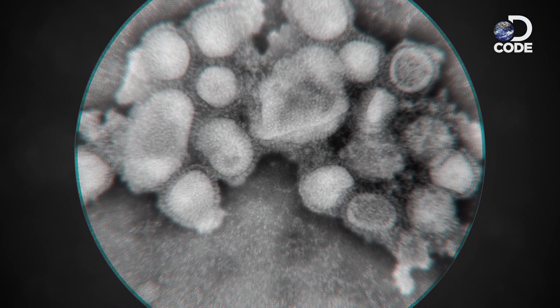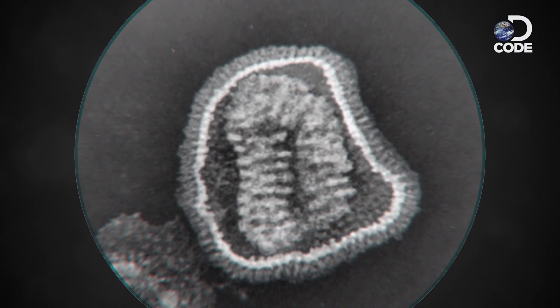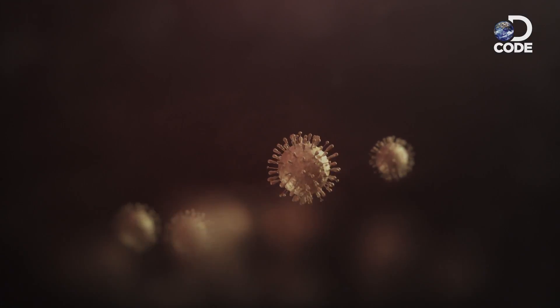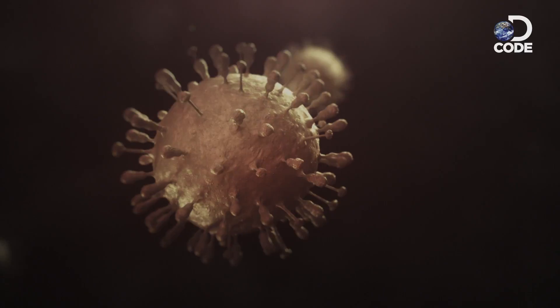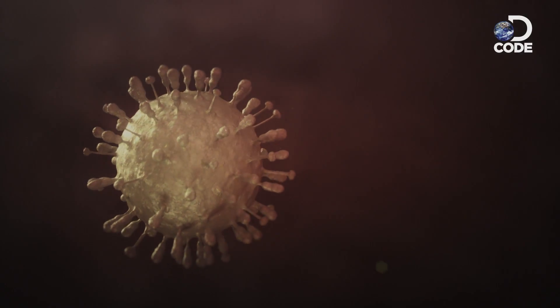Influenza is a microscopic little package almost. It looks kind of like a ball. The virus has two major surface proteins that stick out like spikes. They look in a sense like little lollipops, and these are sort of the business end of the virus.